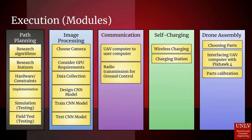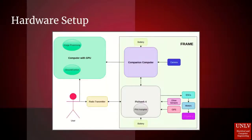The project has been systematically broken down into sub-modules. Each of these sub-modules, except for the drone assembly module, is assigned a dedicated team member to successfully tackle the challenge. Shown here is the hardware setup for our proposed solution. The user interacts with the user computer and the radio transmitter. The onboard companion computer, with respect to the ground control software, controls the flight controller, which in turn controls the motors and other sensors of the drone.